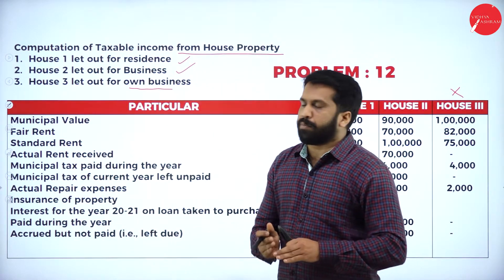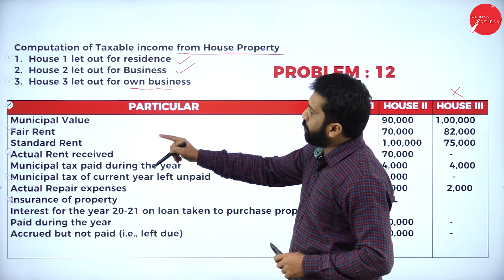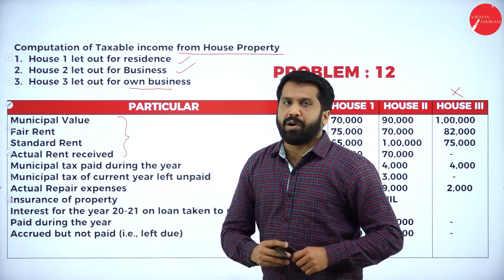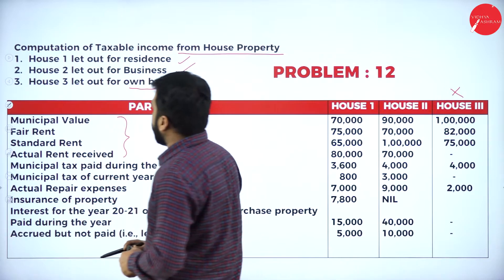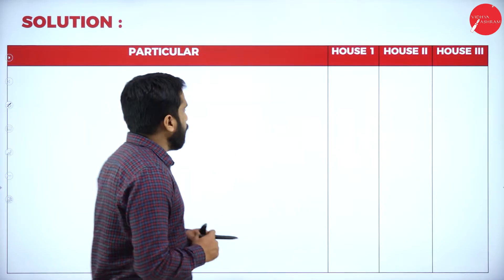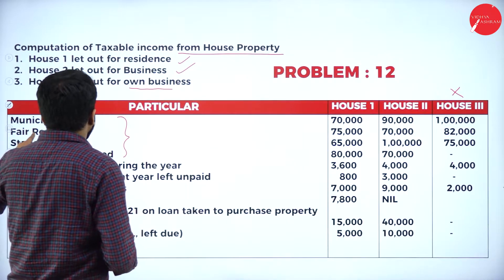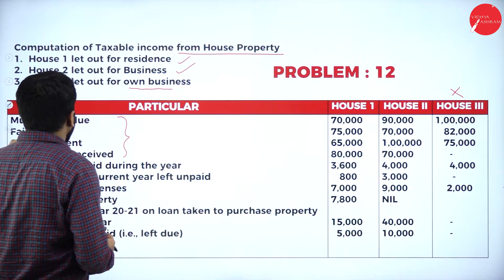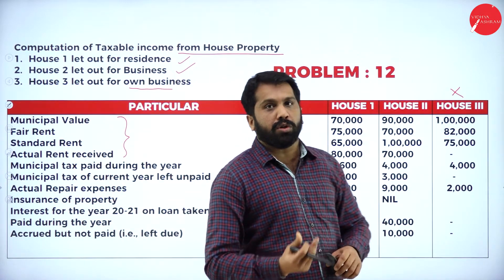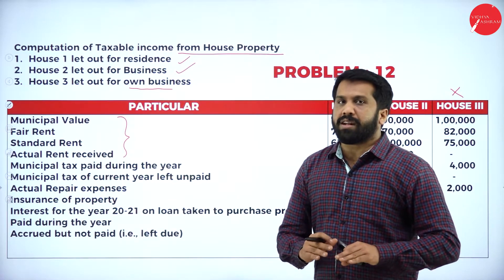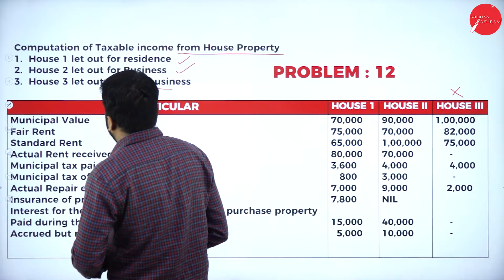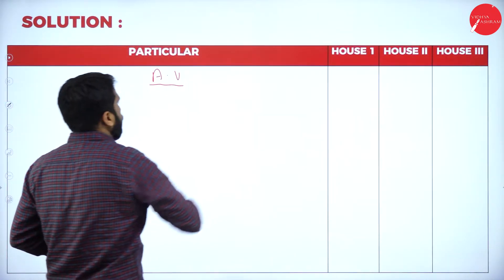House three is used for own business, so we will not calculate anything for house three. We will calculate only for house one and house two. Remember, you have municipal value, fair value, standard rent, and actual rent received — you have calculation on these things. If you calculate everything, you will get your annual value — note it is not net annual value, we are calculating only annual value.